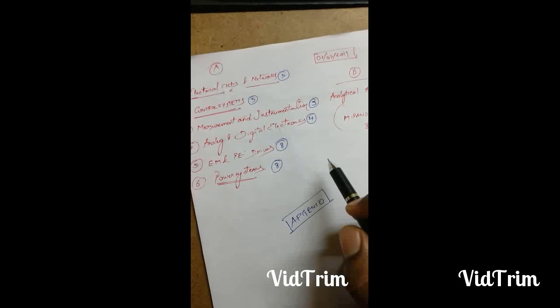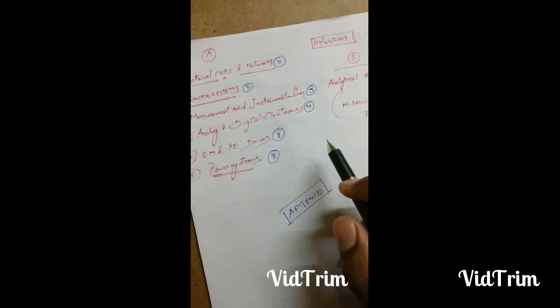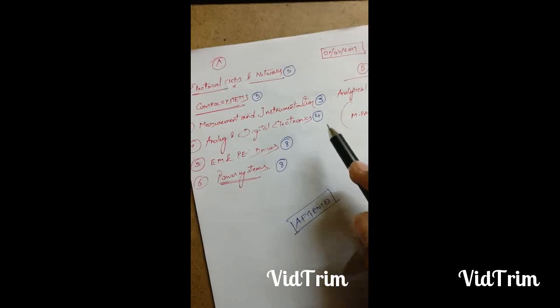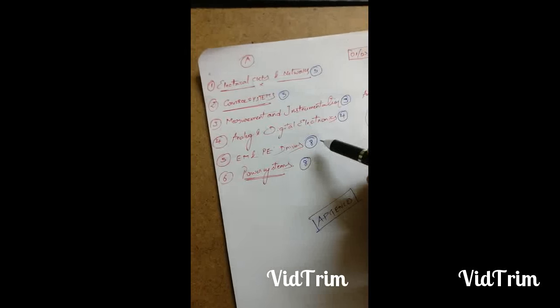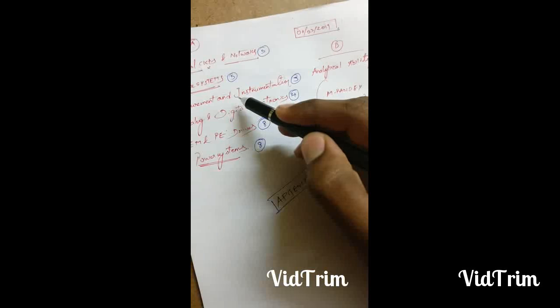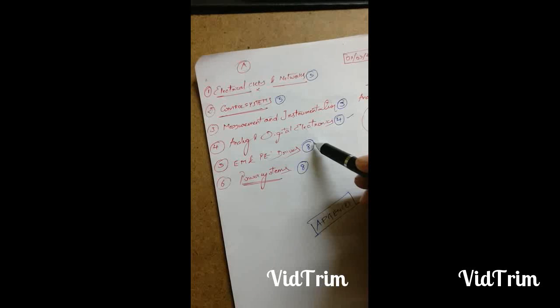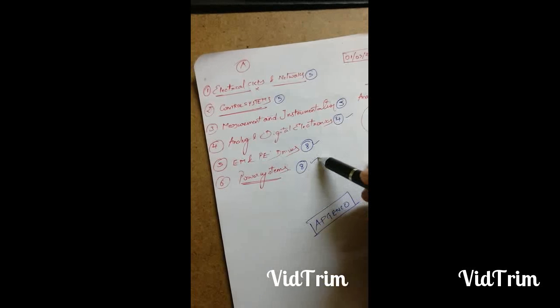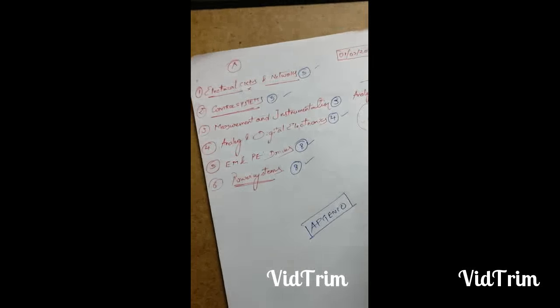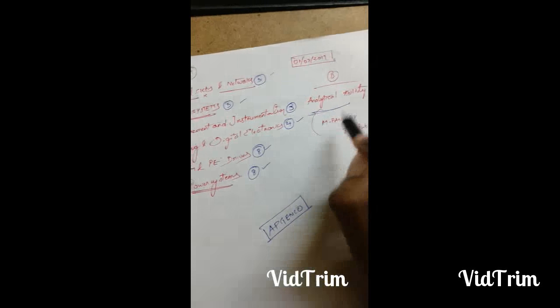Hi friends, now we will see how to crack AP GENCO within a short period of time. According to the AP GENCO notification, we have six subjects: electrical circuits and networks, control systems, measurement and instrumentation, analog and digital electronics, electrical machines and power electronic drives, and power systems. Section B consists of analytical ability.